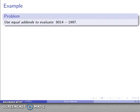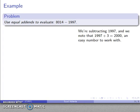So for example, let's say I want to subtract 8,014 and 1,997. What I can view is that 1,997 is pretty close to the benchmark number 2,000. In fact, it's just three away from that. So if I increase this by three, I get a number that's much easier to work with.